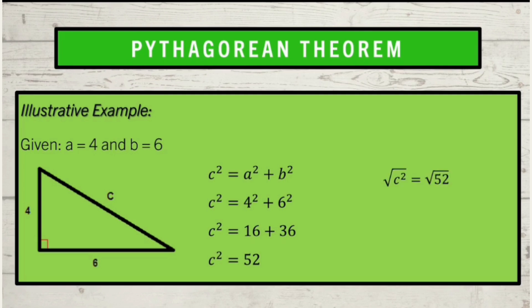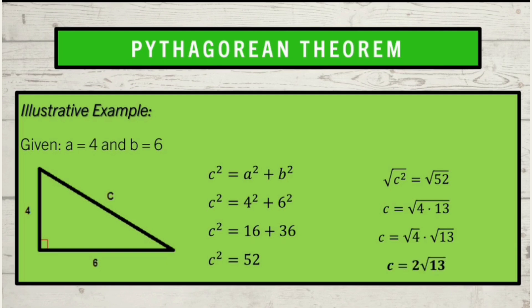Square root both sides to eliminate the square of C. We have the square root of C squared equals the square root of 52. Think of factors of 52 where there is a perfect square number. So we have C equals the square root of 4 multiplied by 13. Therefore, the value of C is 2 square root of 13.